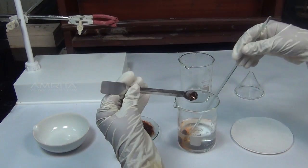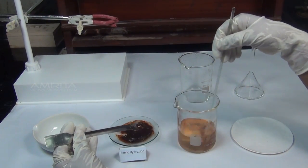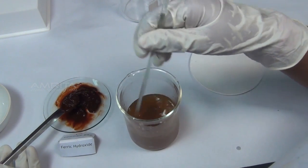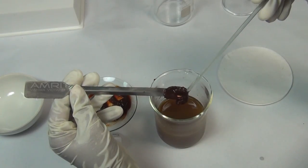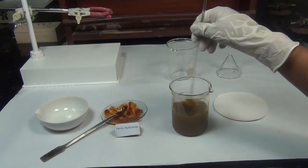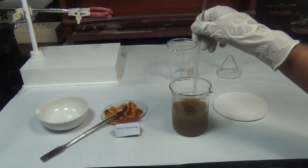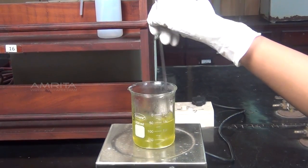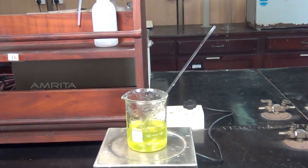Using a spatula, add freshly prepared ferric hydroxide precipitate in small proportions to the solution of potassium oxalate and oxalic acid with constant stirring to dissolve the precipitate. If the precipitate does not dissolve, then warm it and leave the contents for some time.